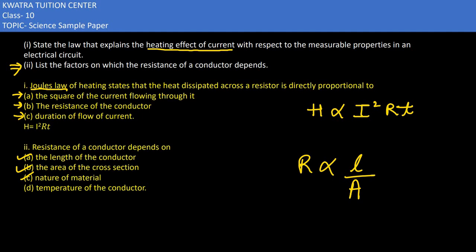So nature of material you will write. And what did you write - that temperature of the conductor. So these are all the factors dependent on the resistance of conductor.